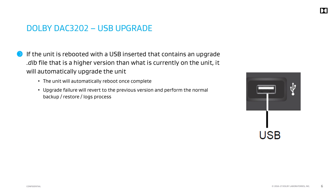If there is need to upgrade a DAC-3202, the appropriate version .dlb file for the upgrade should be stored on a USB drive. If the DAC-3202 is rebooted with the USB drive containing that file mounted, it will initiate the upgrade process once it confirms that the .dlb file contains a newer version. The unit will automatically reboot once the upgrade is complete. Upgrade failure will revert to the previous version and perform the normal backup-restore-logs process.